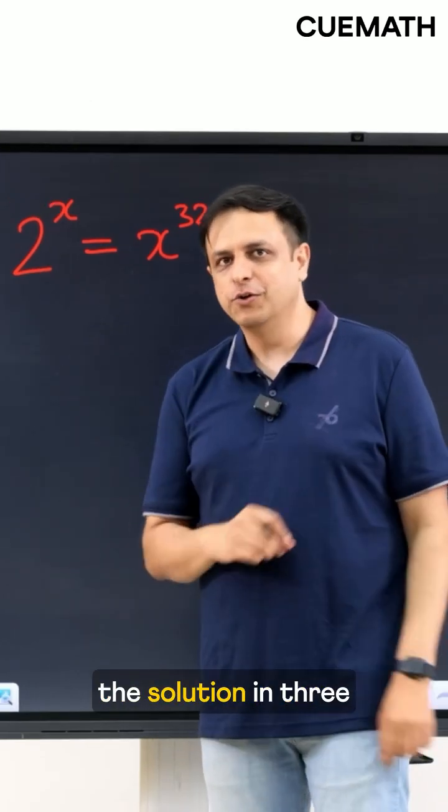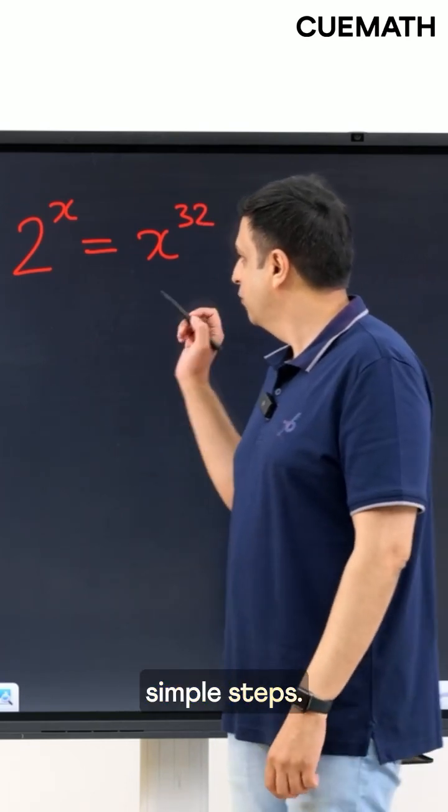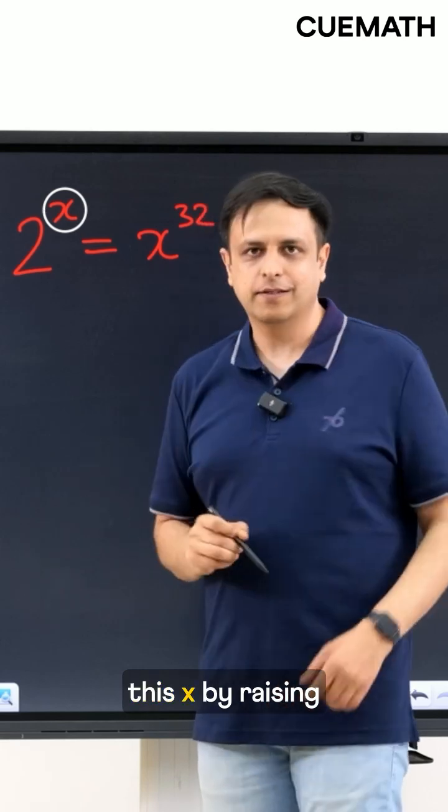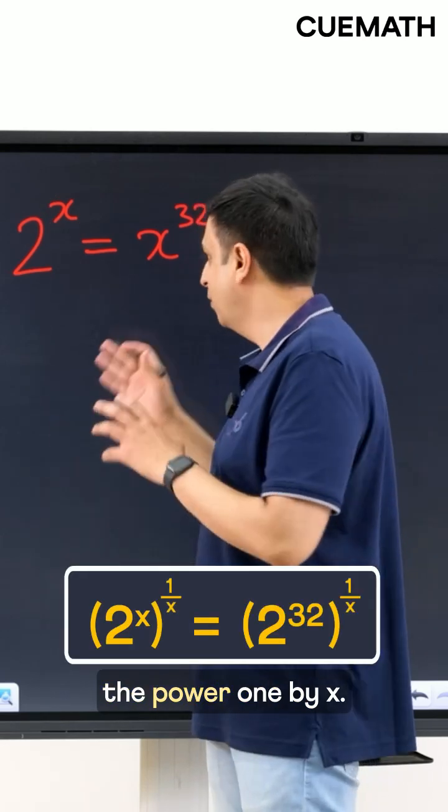Now here's the solution in three simple steps. First get rid of this x by raising both sides to the power 1 by x.